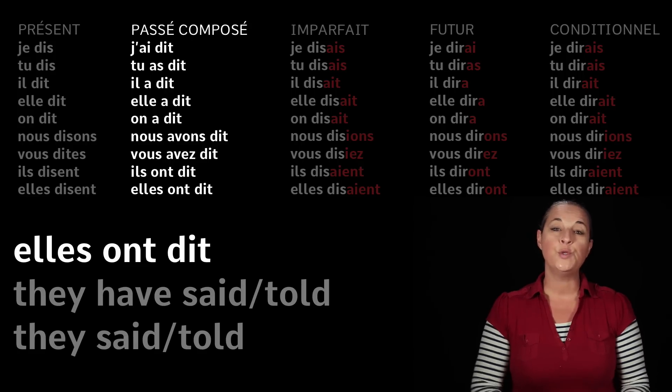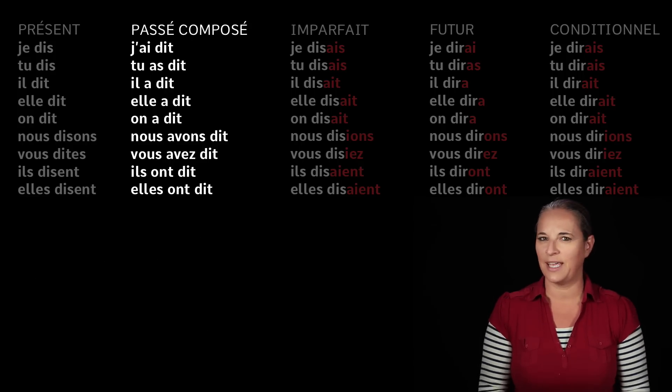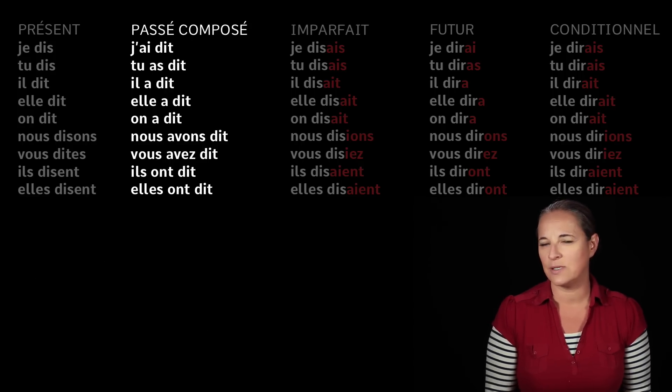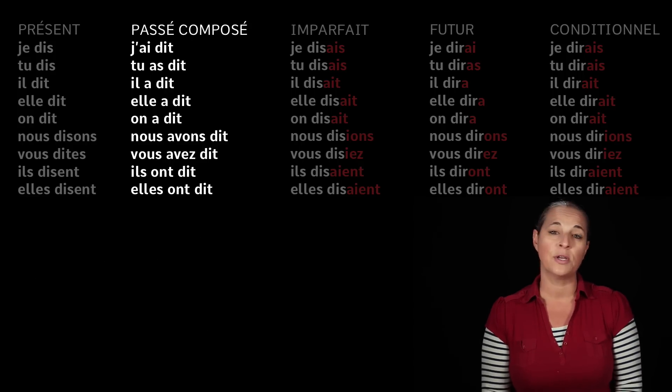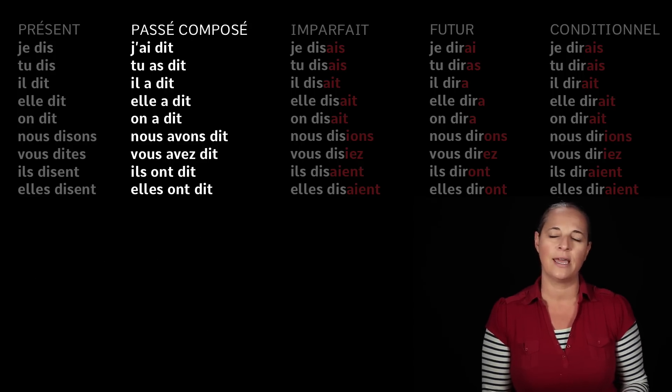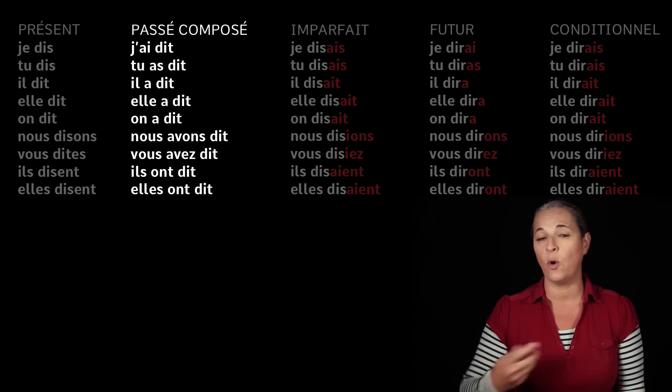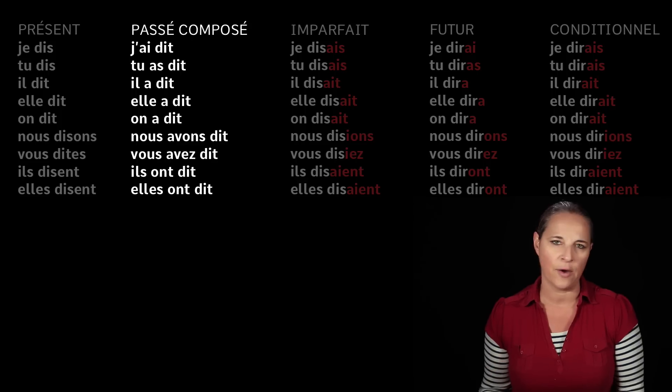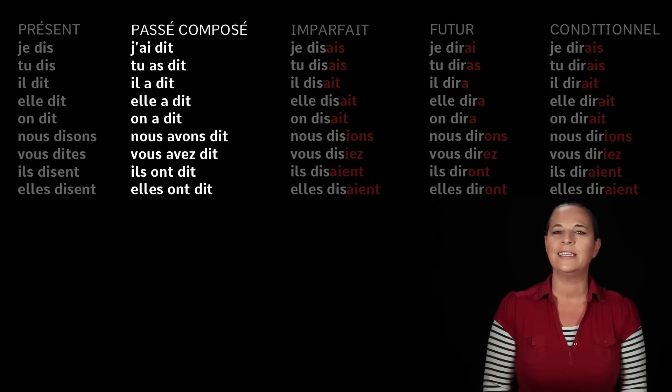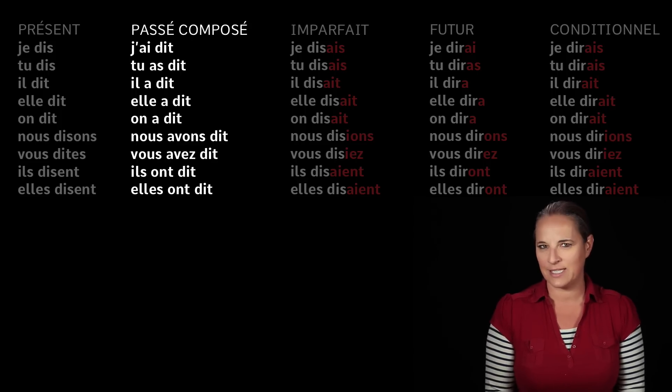Notice the Z sound — ils ont, elles ont. That's purely because 'ils' and 'elles' have an S and 'ont' begins with a vowel. We call it a liaison.